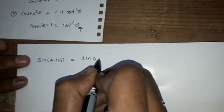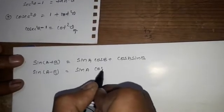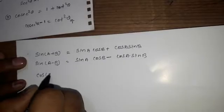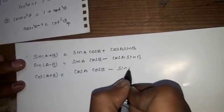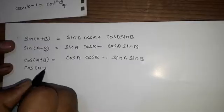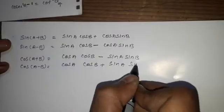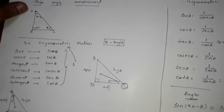We also have some addition and subtraction formulas: sin(A + B) = sin A cos B + cos A sin B; sin(A − B) = sin A cos B − cos A sin B; cos(A + B) = cos A cos B − sin A sin B; and cos(A − B) = cos A cos B + sin A sin B.